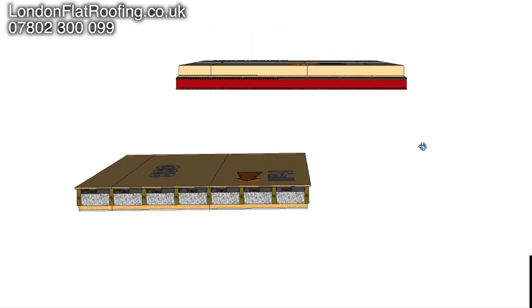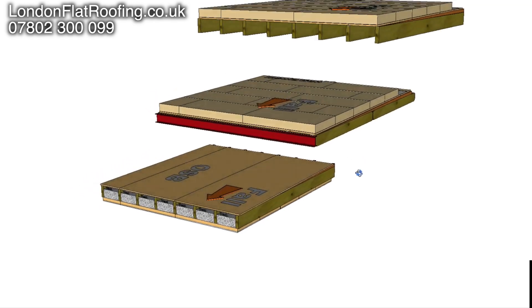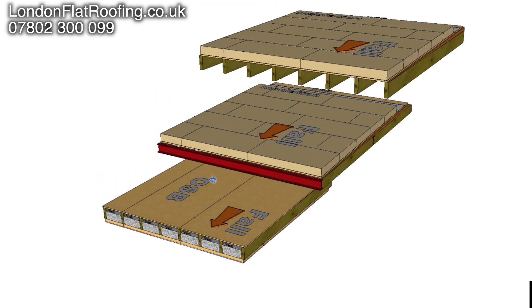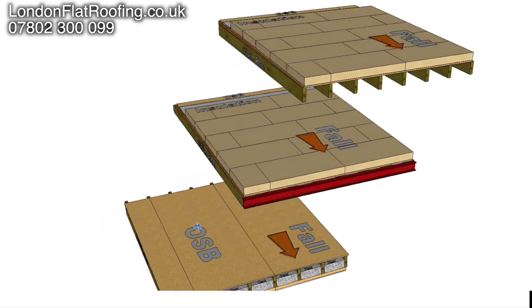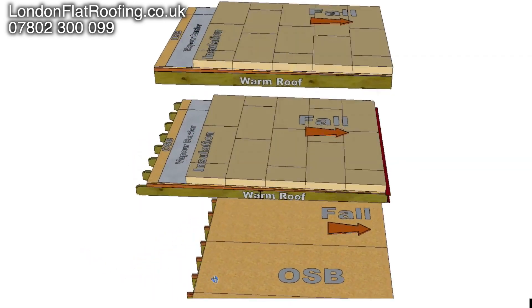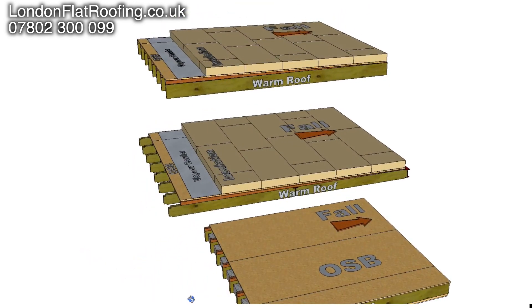So realistically there are three options there for relatively small construction of warm roofs and cold roofs, and this gives you the idea of what can or can't be done. Thanks for watching — my name is Stephen from London Flat Roofing.